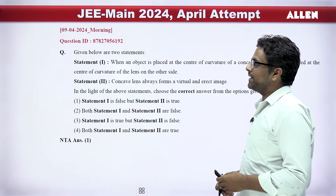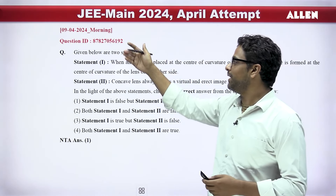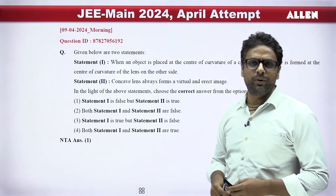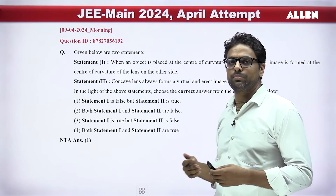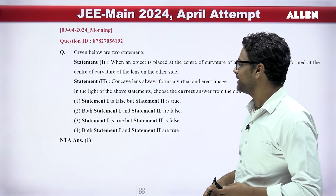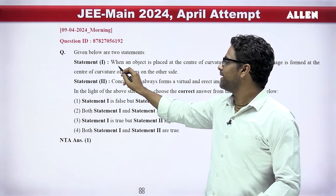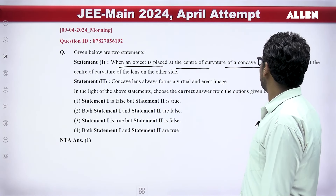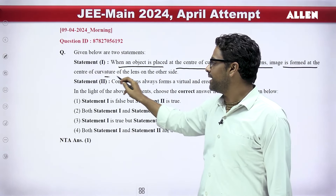I have a question from the 9th April morning shift exam. It is a question from optics — a very simple question. Let's discuss it. The first statement: an object is placed at the center of curvature of a concave lens; the image is formed at the center of curvature of the lens on the other side.